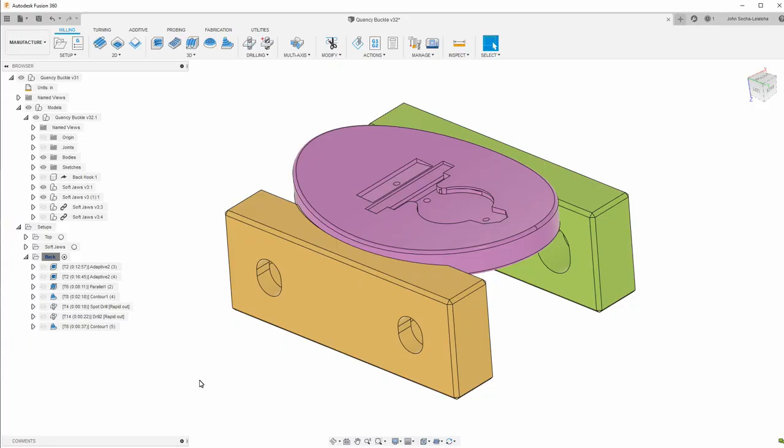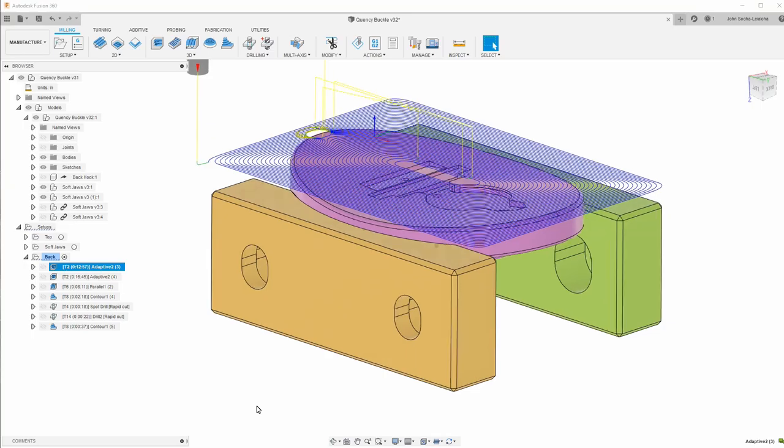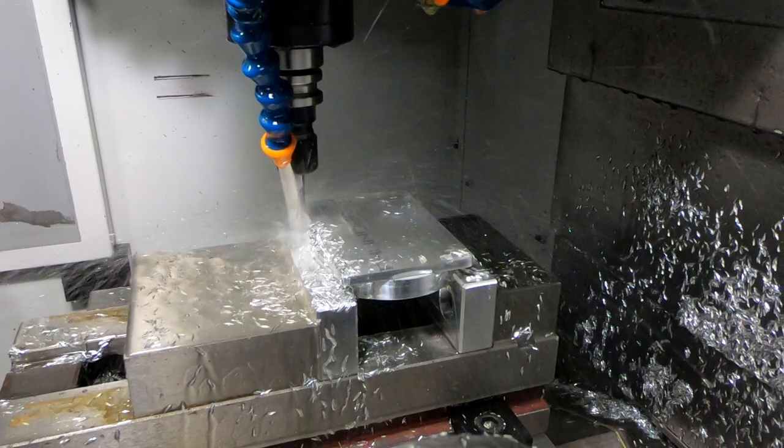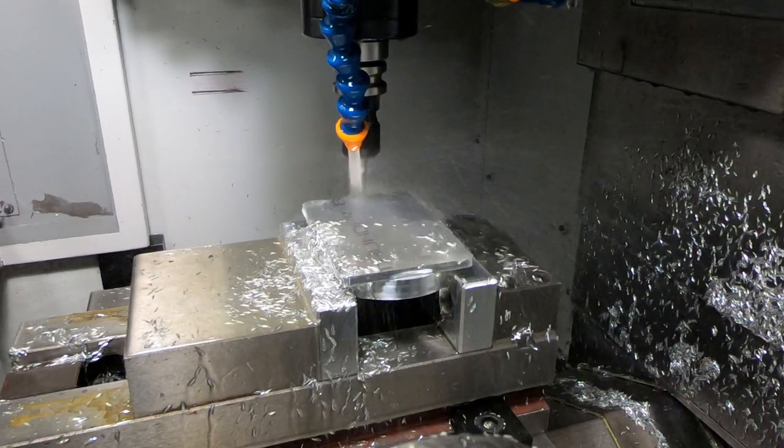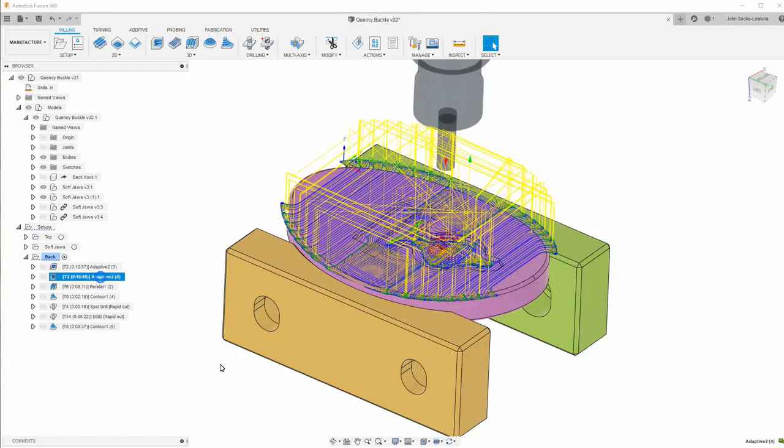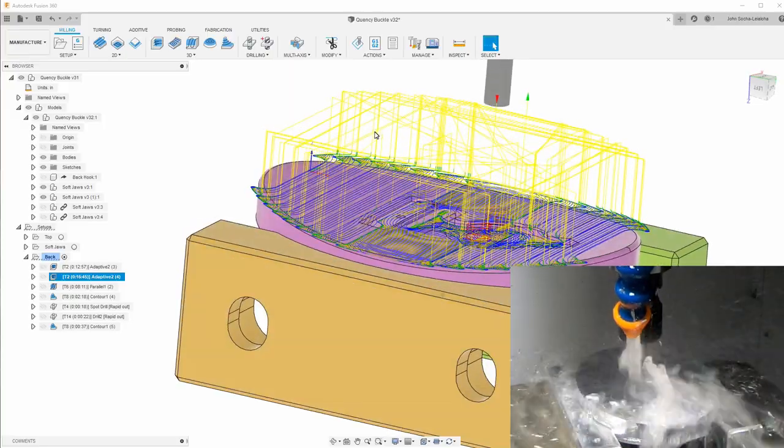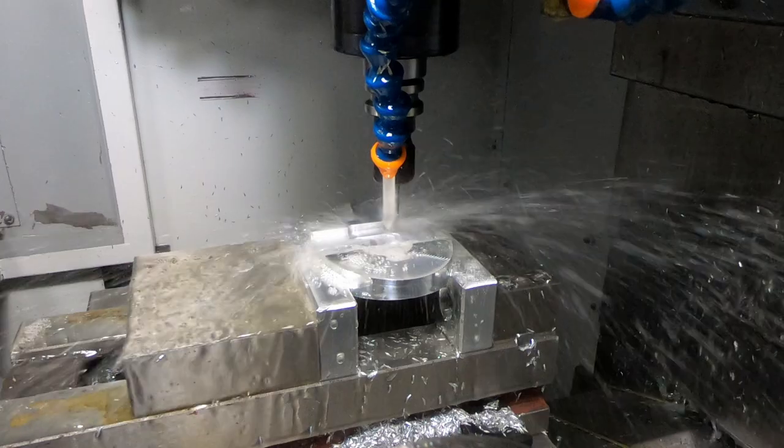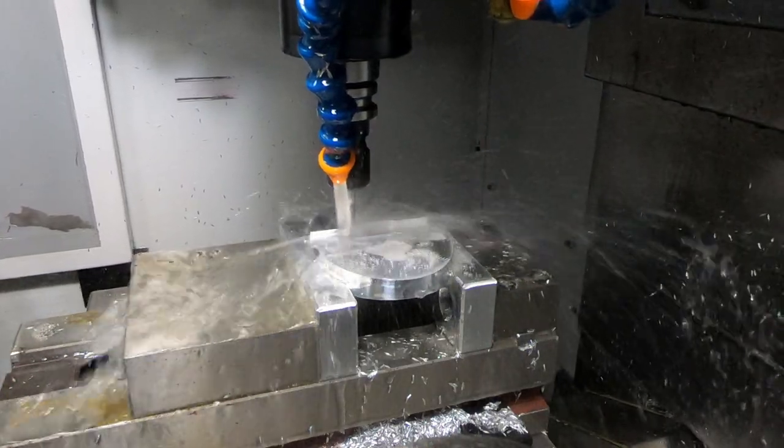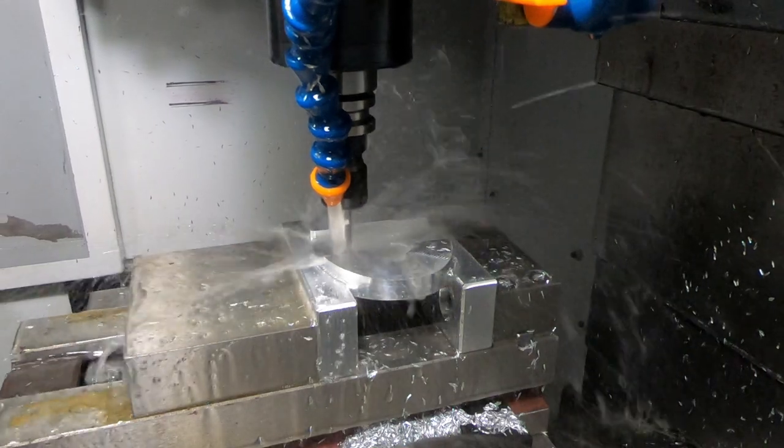For the back side I created this setup which has the remaining stock. The first step is to use an adaptive to clear the hat off the top. The next thing is to do another adaptive that clears out the curved part as well as the pocket for the clip and the hook. These two operations together took about half an hour.